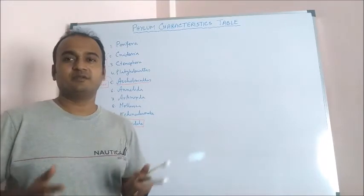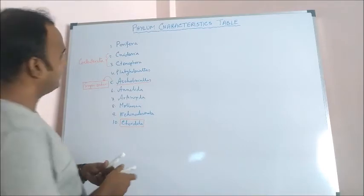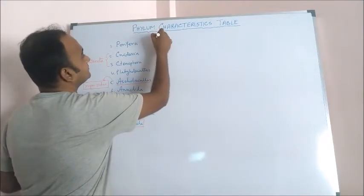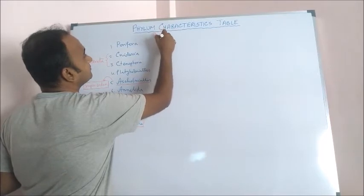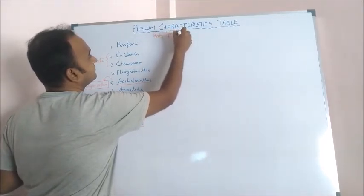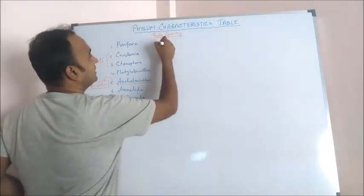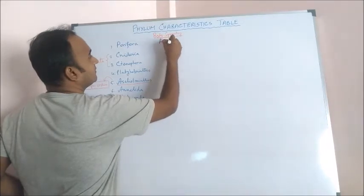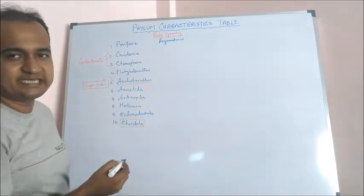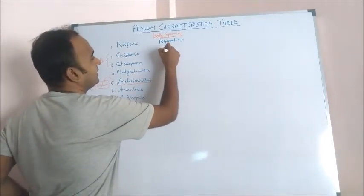Let's start with the general characteristics of those phyla. First of all, body symmetry. Porifera is asymmetrical. Cnidaria and Ctenophora radial.